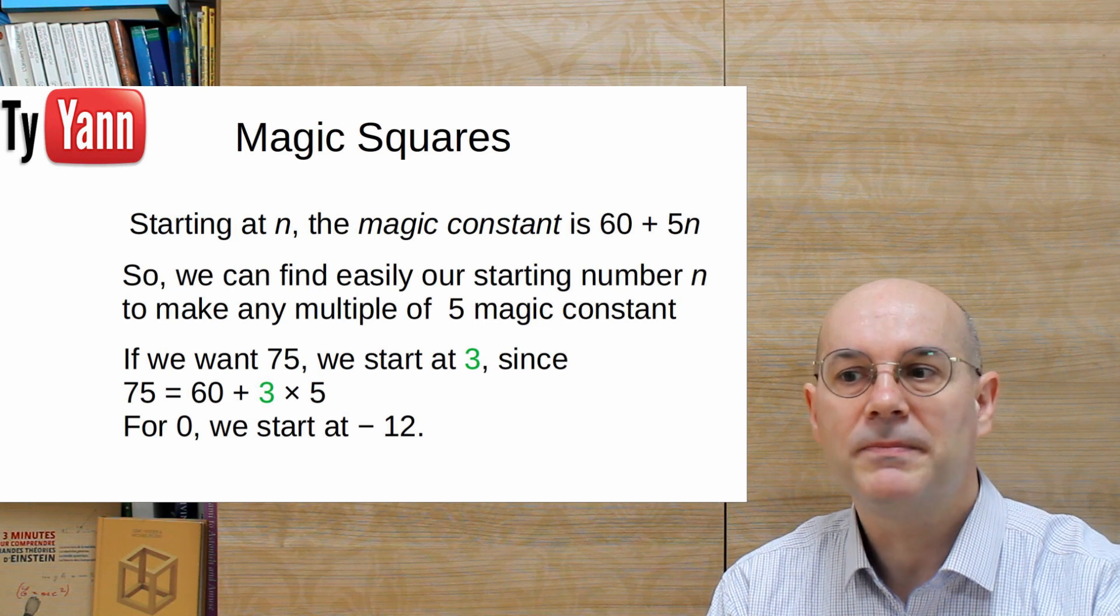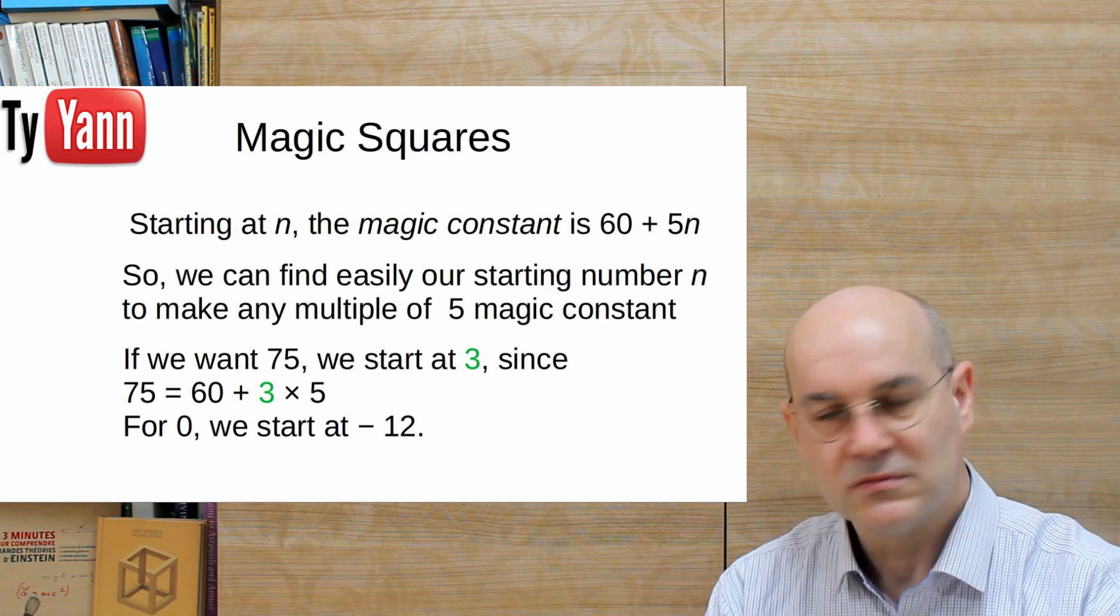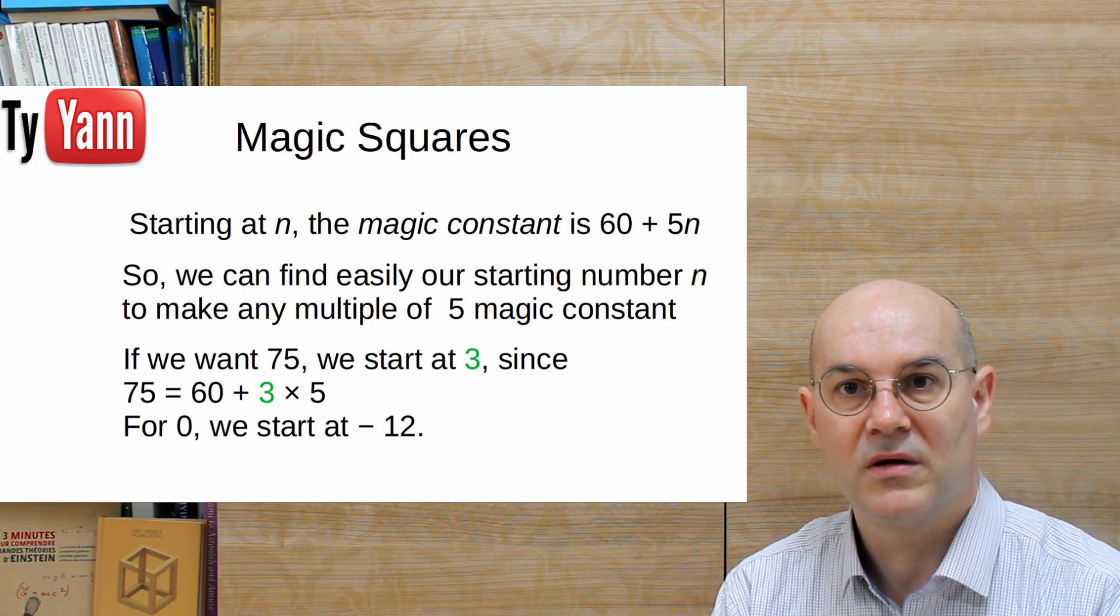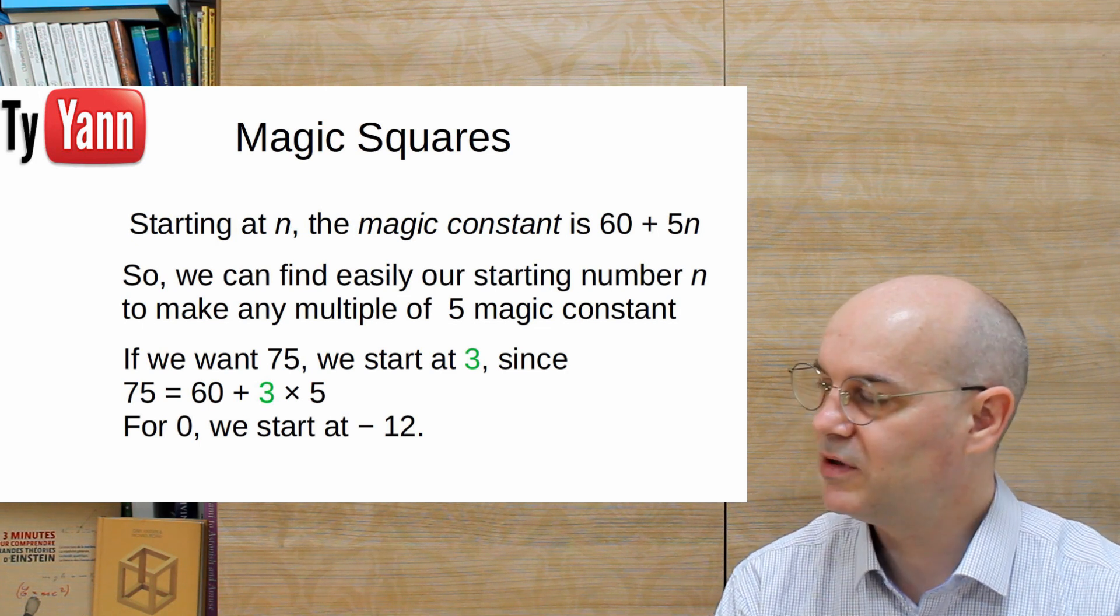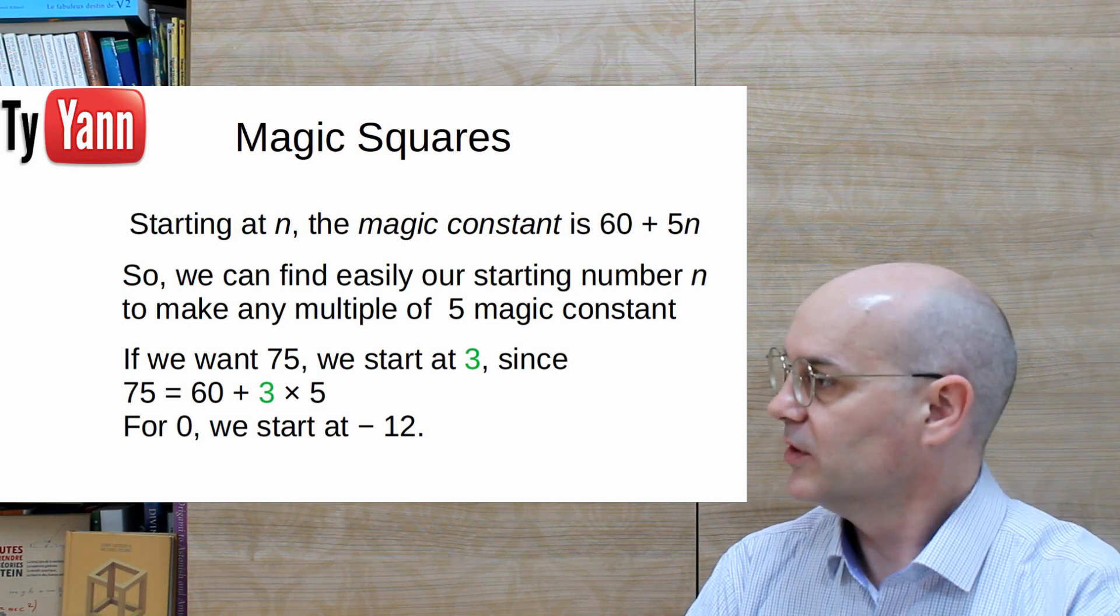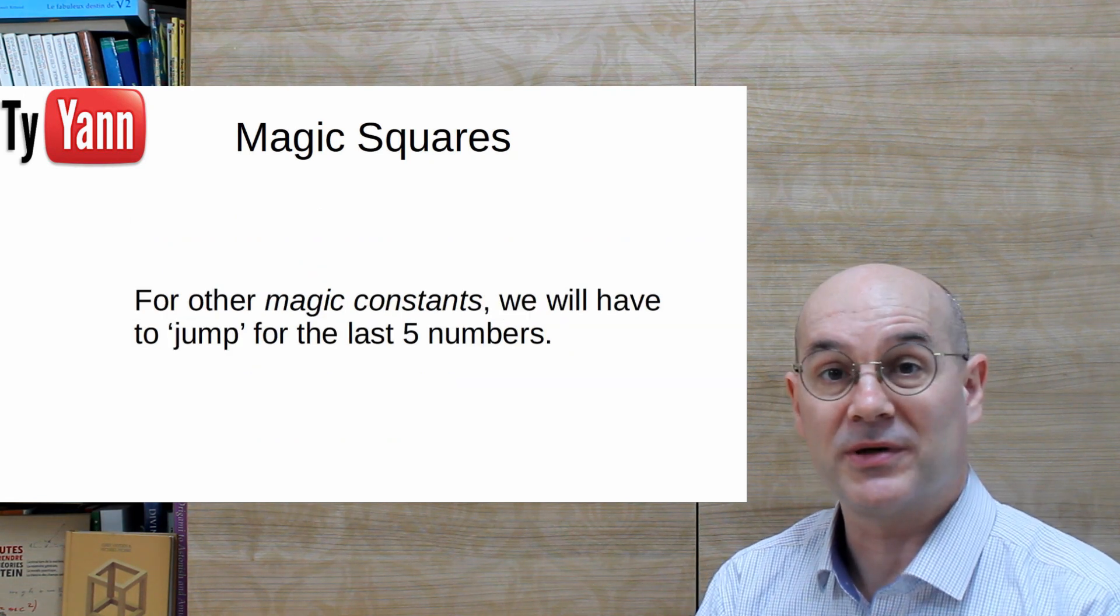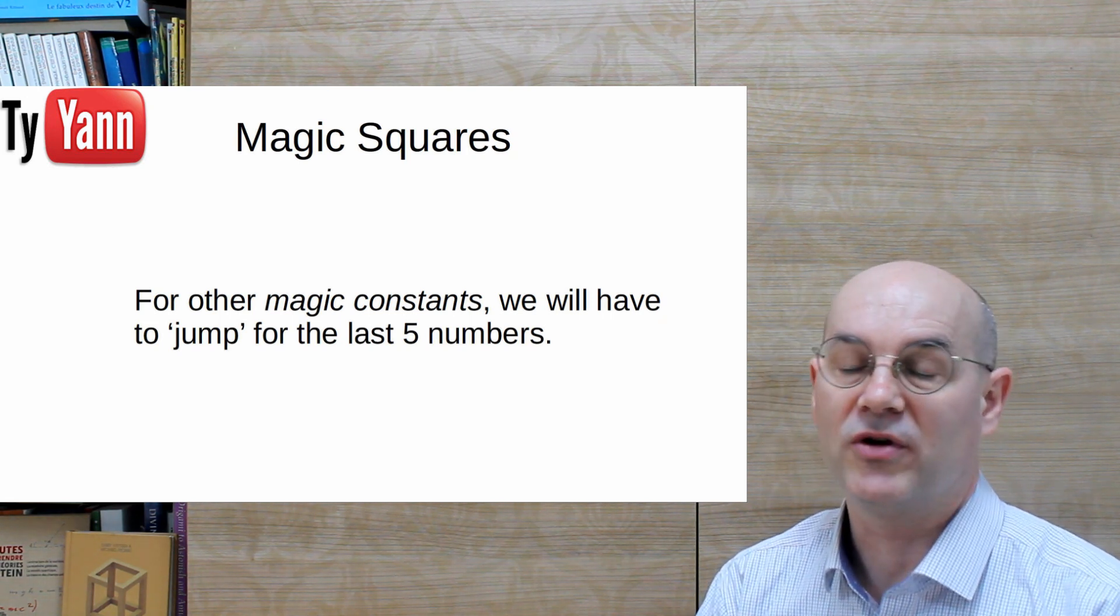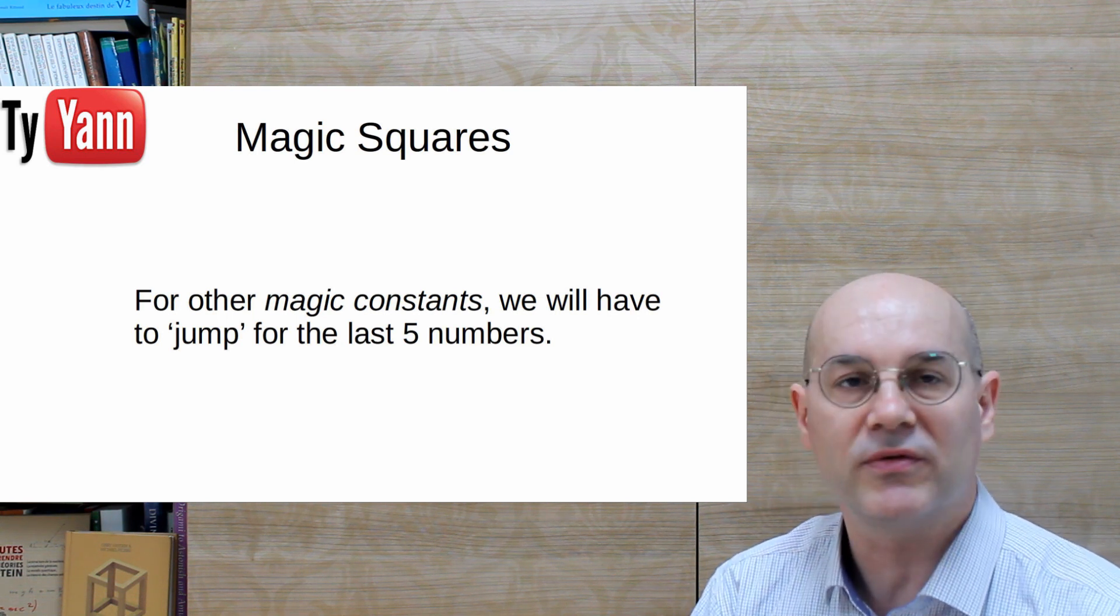So once you get this for the multiples of 5, that's easy. You practice a little bit, and you're going to see it's very easy. 60 plus a multiple of 5 times something. And this time something is the number you're going to start with. Fill up your square, and you get it. Not very difficult. But you're going to ask me if somebody wants something else than a multiple of 5. Because so far we can make any multiple of 5, but that's it. What about somebody who wants to make 78? We will jump the last 5 numbers when you fill up our grid.